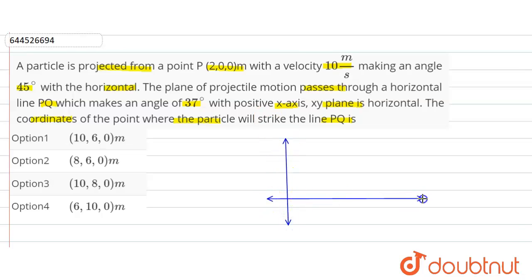This is the y-coordinate and this is the x-coordinate. Point P is here with coordinates (2, 0, 0), at an angle of 37 degrees with the horizontal line.